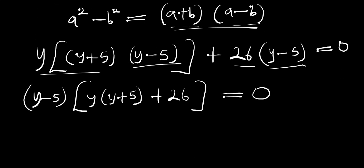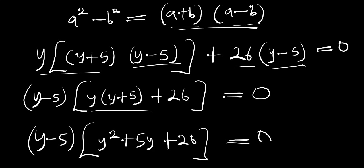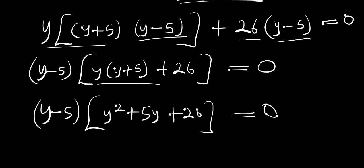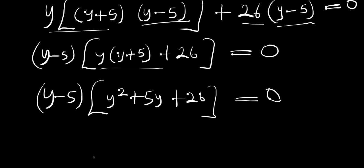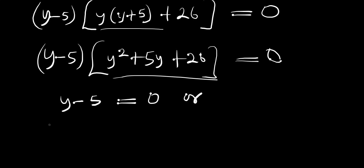So that means we multiply out: (y - 5)(y² + 5y + 26) = 0. At this point we have y - 5 = 0, or y² + 5y + 26 = 0.